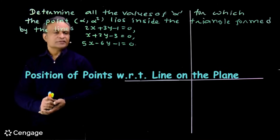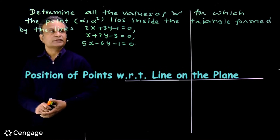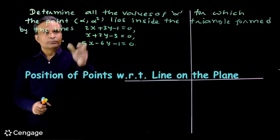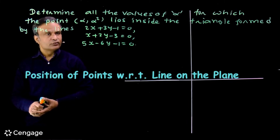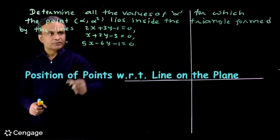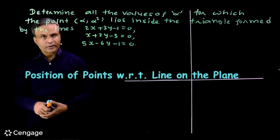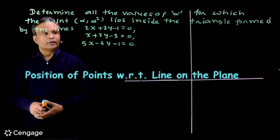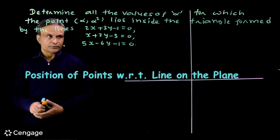Let us try this question once asked in GE exam. The question is: determine all the values of alpha for which the point (alpha, alpha squared) lies inside the triangle formed by the lines 2x plus 3y minus 1 equals 0, x plus 2y minus 3 equals 0, and 5x minus 6y minus 1 equals 0.